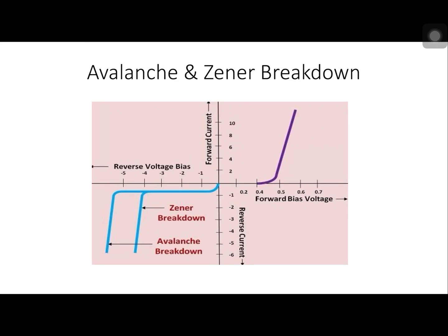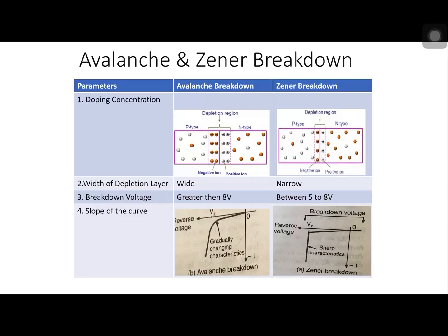Today we are going to compare avalanche breakdown and Zener breakdown. The first point of comparison is doping concentration, which can be either high or low. High doping concentration means a narrow depletion layer, and low doping concentration means a wider depletion layer. A junction with low doping concentration and wider depletion region will break at a voltage greater than 8V, whereas a junction with higher doping and narrow depletion may break between 5V to 8V — the first case is avalanche breakdown.